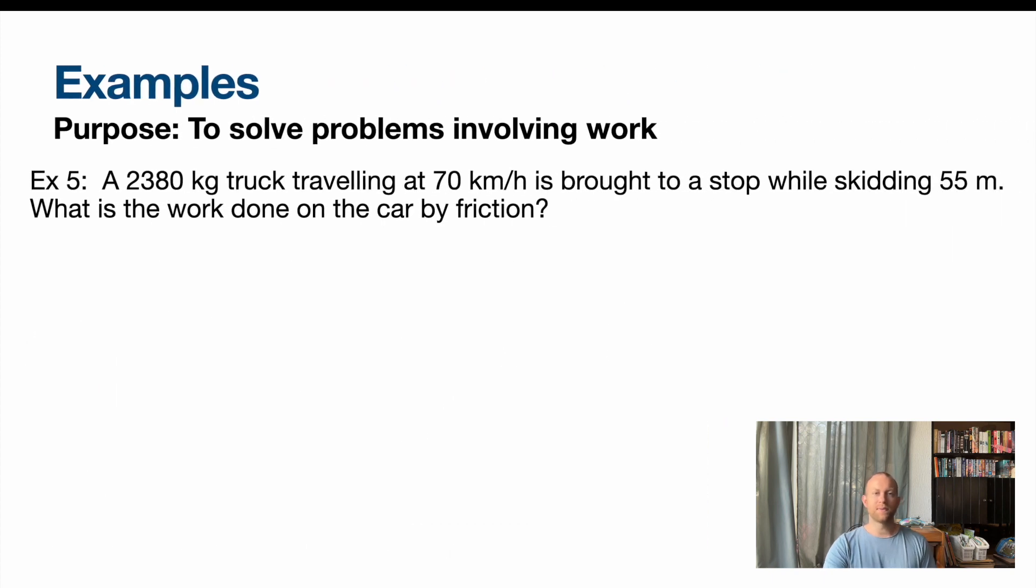Another example here. Now we've got a truck traveling at 70 kilometers an hour, and it's being brought to a stop while skidding. So it's just caused by friction here. We want to know the work. So if we draw a free body diagram for this, force of gravity, normal force, these are equal, it's a truck, it's not accelerating up or down. We've got friction, and that's it. It's coming to a stop, so it's slamming on the brakes. This is it.